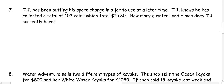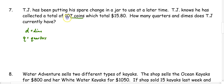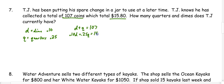Number 7: TJ has been putting away spare change in a jar. TJ knows he has collected 107 coins for a total of $15.80. How many quarters and dimes does TJ have? We have two variables: dimes (D) and quarters (Q). We know there are 107 coins, so D plus Q equals 107. Dimes are worth 10 cents, so as a decimal that's 0.10, and quarters are worth 25 cents, so 0.25. So we'd have 0.10d plus 0.25q equals $15.80.